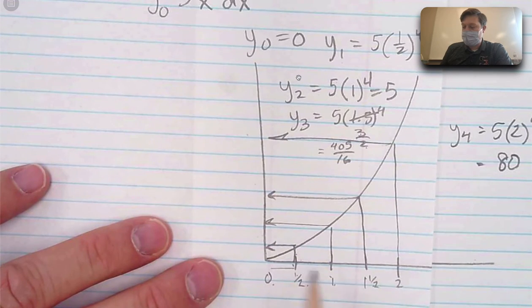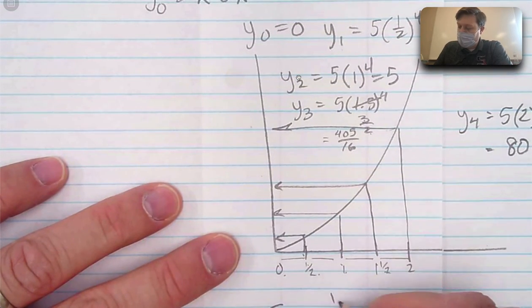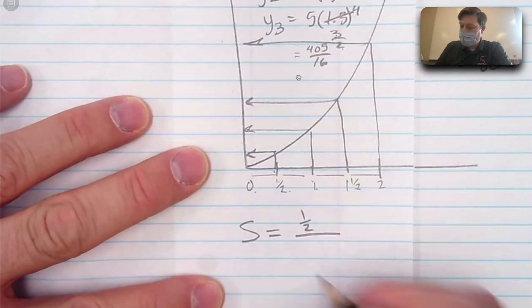h, remind you, h is the distance of each of the intervals. So h is 1 half. So Simpson's says 1 half divided by 3.